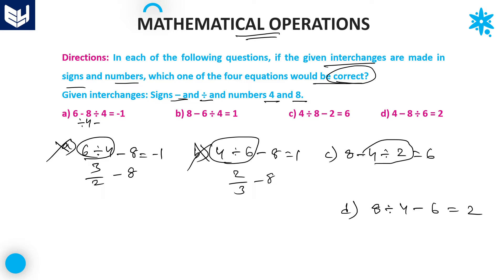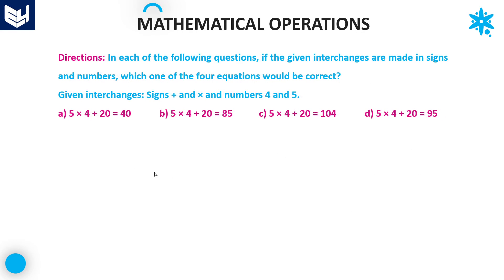For option C, do the division first: four divided by two equals two, then eight minus two equals six — which satisfies the condition. Therefore option C is the right answer. Remember: whenever questions are of this model, first interchange the signs and numbers, then verify the given options.